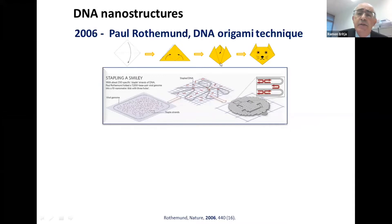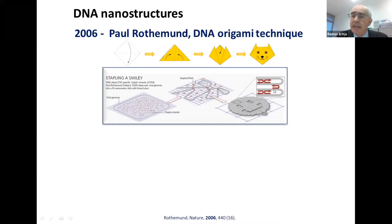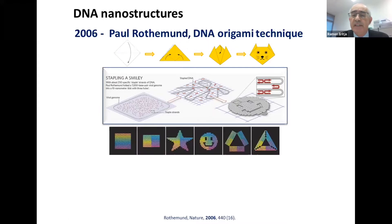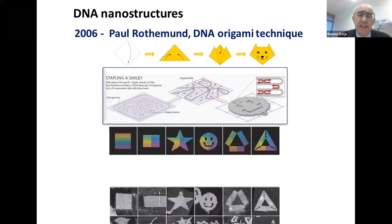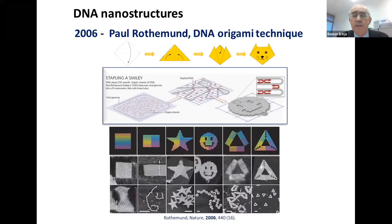By using around 200 to 300 staples, it can fold the DNA structure to make an image. You need to select 200 oligonucleotides to make different figures. This is what was predicted based on DNA calculations and selection of DNA sequences, and this is what was actually made.